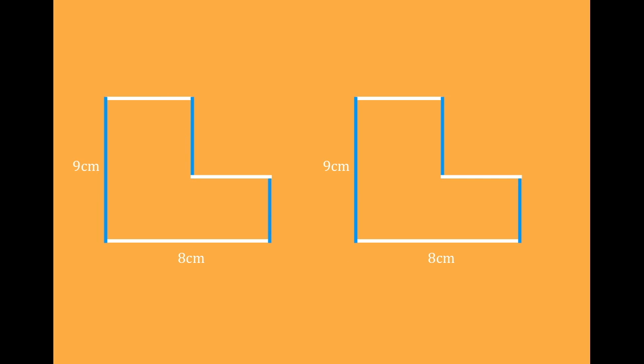On this next screen you can see we've got two of the same compound shape. We're going to fiddle with one of them to show you the easy way of finding the perimeter. That's why it's duplicated on here. Now we don't have the length of all of the sides so we can't add up all of the sides to find the perimeter.